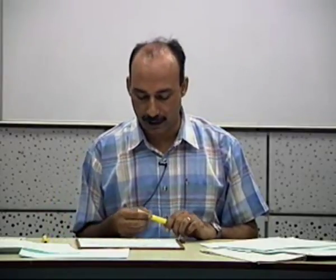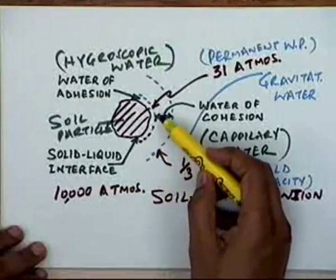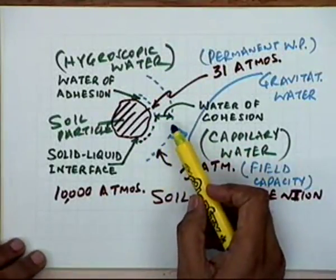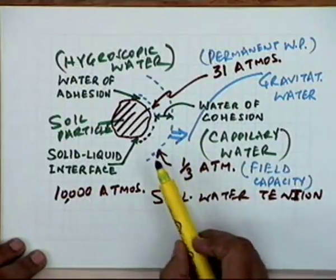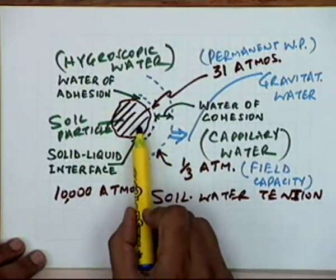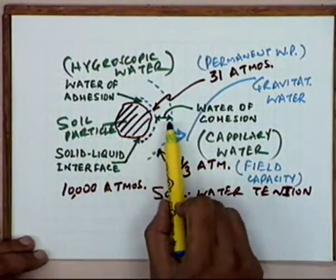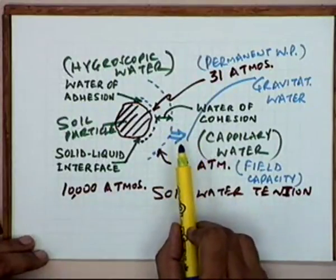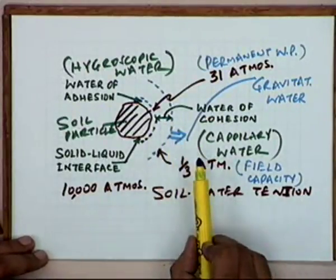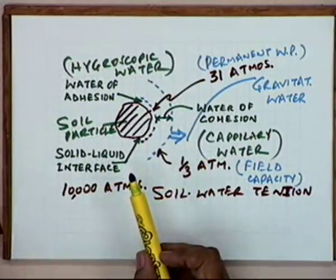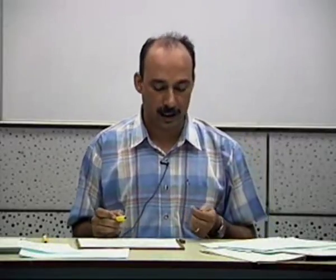There are many soil particles arranged in a soil, and these form capillaries. The amount of water available within the soil will be a function of all these processes plus the size of the capillaries and their arrangement — all those things decide how the water is going to be available in the soil and how much of it will be used.